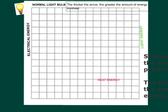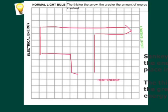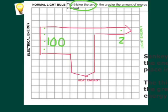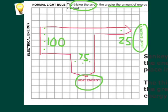For this example, we're going to have 100 joules of electrical energy going into the light bulb. It's going to be transferred usefully into 25 joules of light energy and 75 joules of heat energy. We also need to remember the thicker the arrow, the greater the amount of energy involved — four boxes representing 100 joules, one box representing 25 joules, and three boxes representing 75 joules. The thicker arrow is for heat, showing that a normal light bulb is not very efficient.